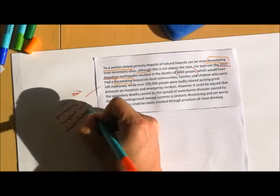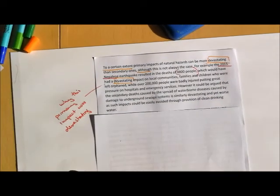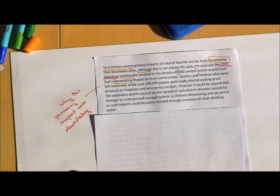It's very easy to forget that as soon as you say 8,100 people dead, it should be obvious about why you're talking about devastation. However, we've got to remember that the examiner is not allowed to assume or imagine what you're thinking, so it's very important to spell it out.